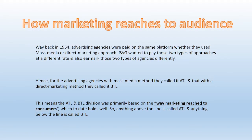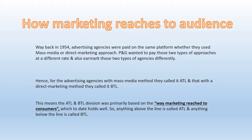The very important point is how marketing reaches the audience. Way back in 1954, advertising agencies were paid on the same platform whether they used a mass media or direct marketing approach. P&G, Procter and Gamble, wanted to pay those two types of approaches at a different rate and also earmark those two types of agencies differently. And that is where everything started. Hence for the advertising agencies, the mass media method they called ATL and the direct marketing method they called BTL. This means ATL and BTL division was primarily based on the way marketing reached to consumers, which to date holds.